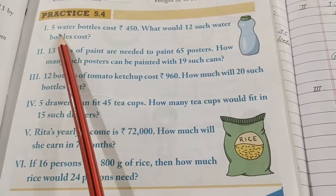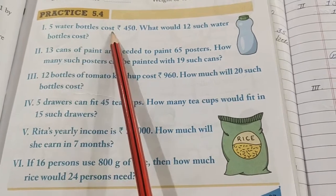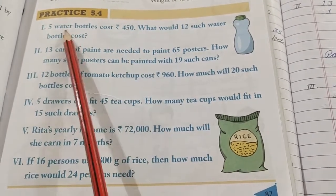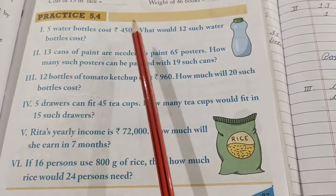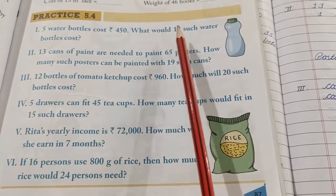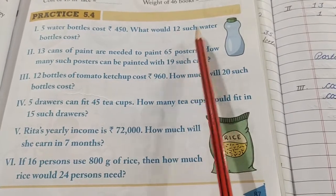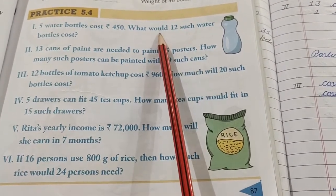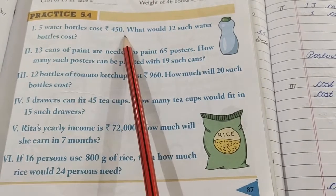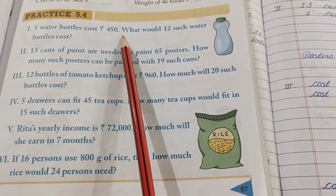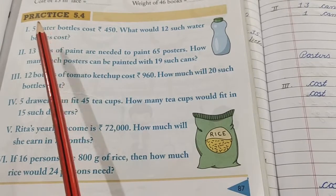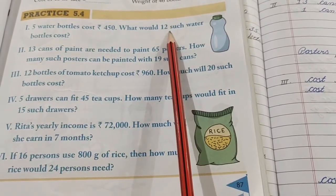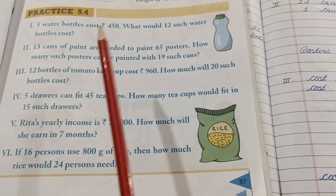See the first sum. Five water bottles cost Rs. 450. What is the meaning of this sentence? So what would be the cost of 12 such water bottles? We know five. We have a unitary method where first we will go from 5 to 1 and then from 1 to 12. We will read one statement and then you will get the sums together.